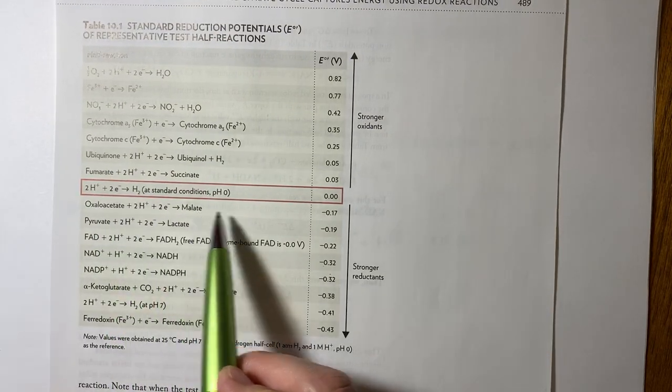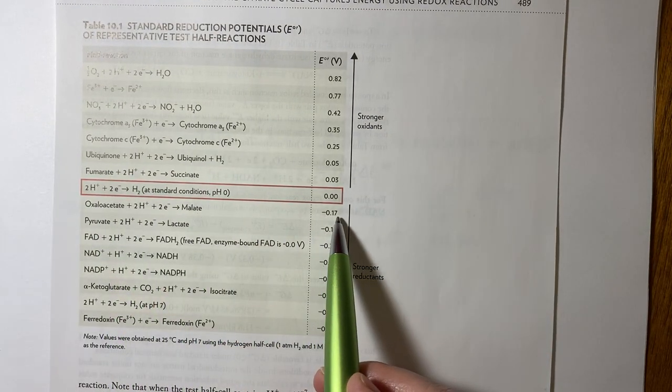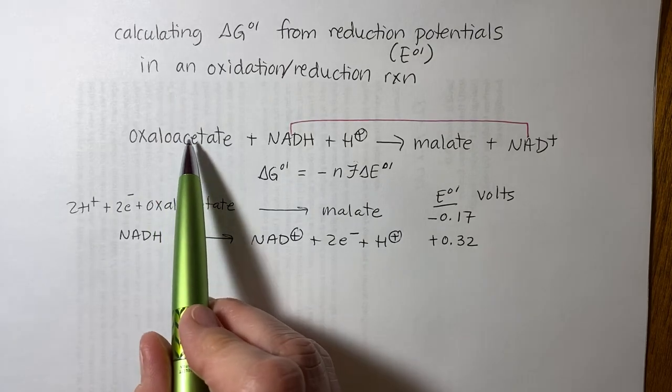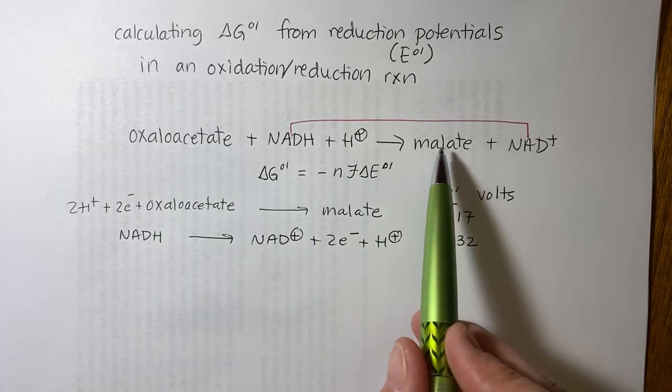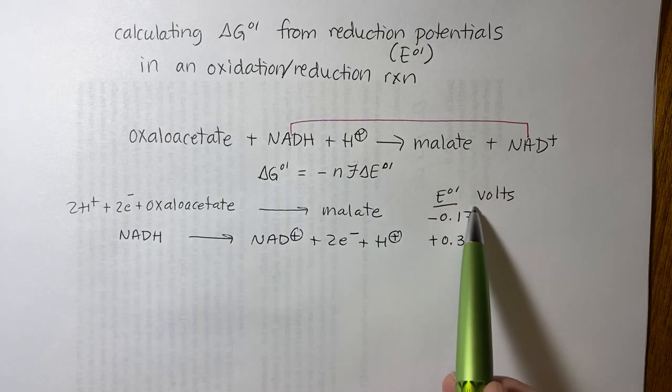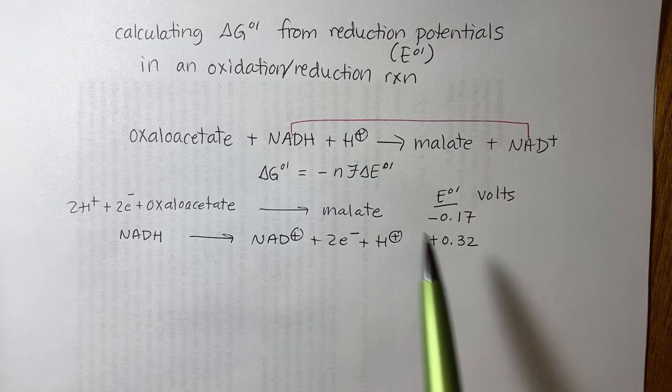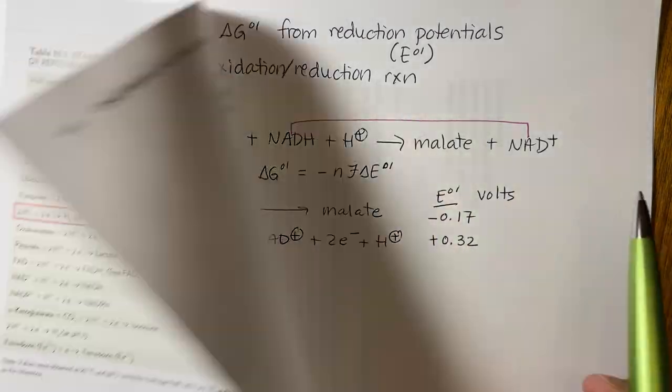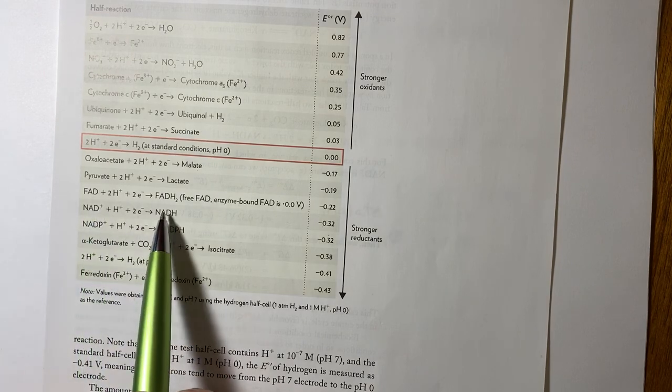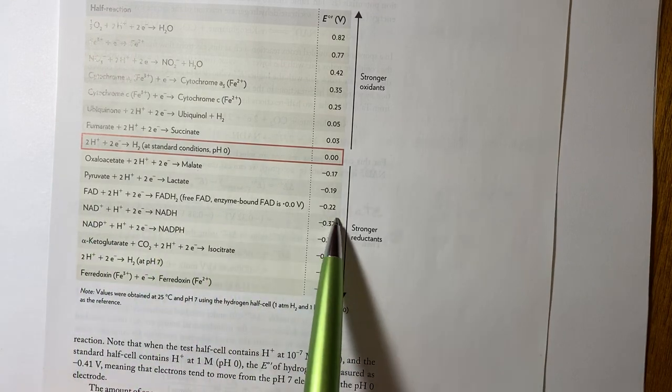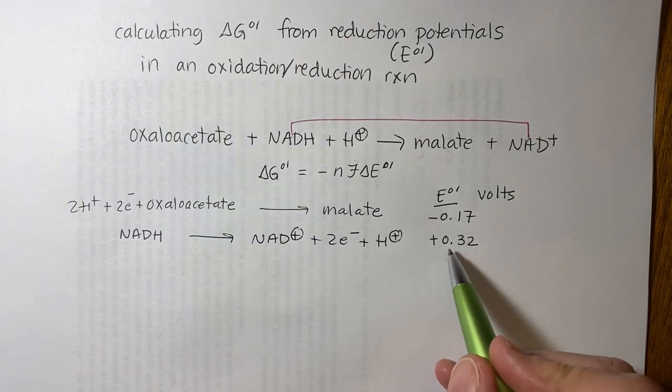So let's look at that one more time. The oxaloacetate to malate is minus 0.17. It's oxaloacetate to malate, so that's written as it's written in the table. So we leave it exactly the same. The NADH goes to NAD plus. In the table, it's NAD plus to NADH. So we change the sign of the minus 0.32. So that's why I have plus 0.32.